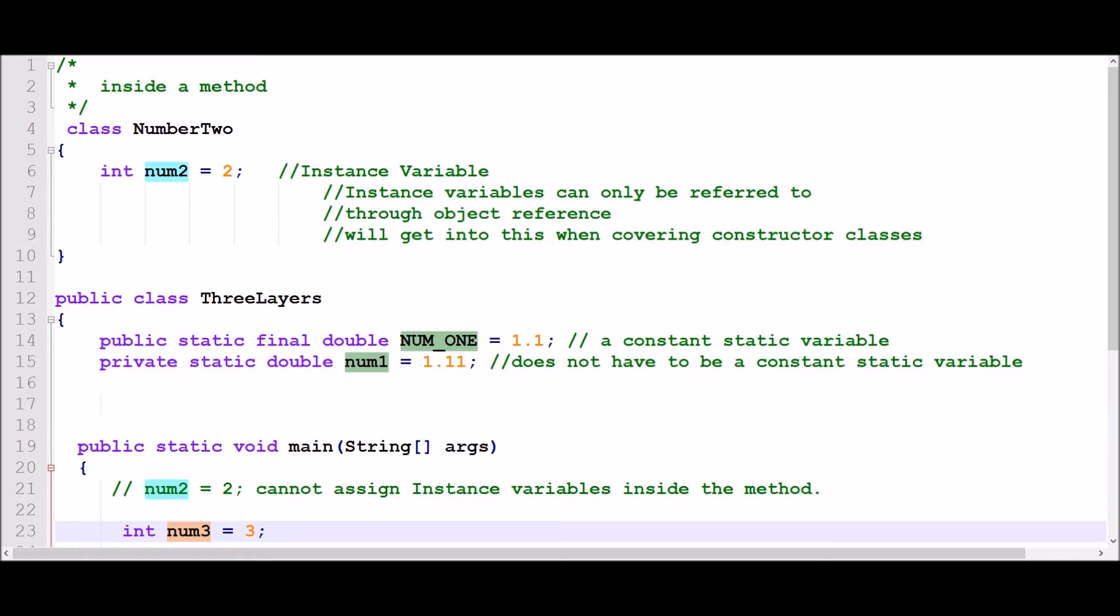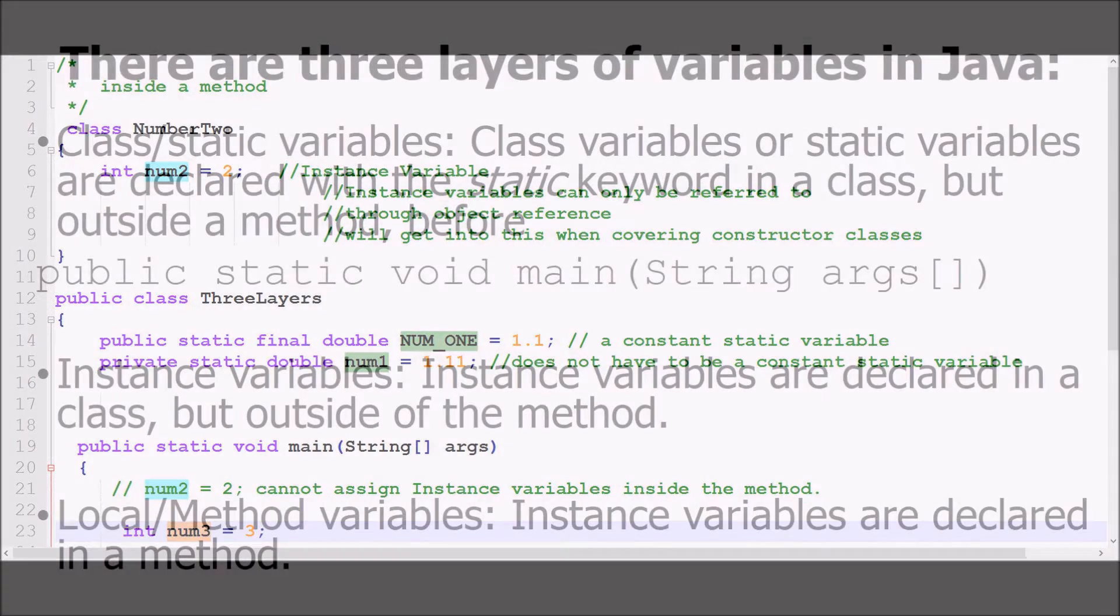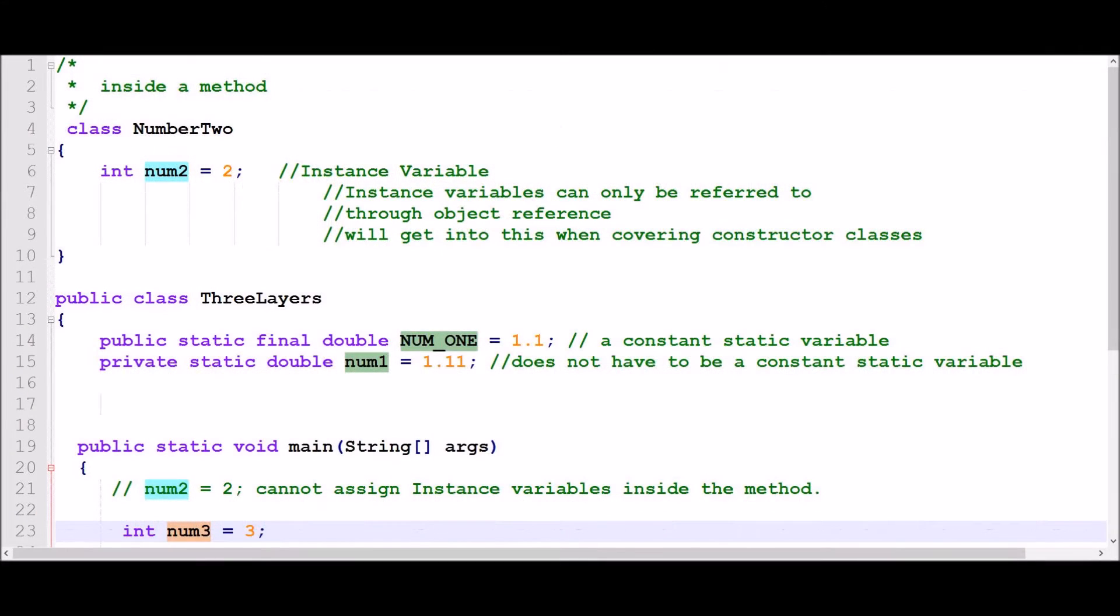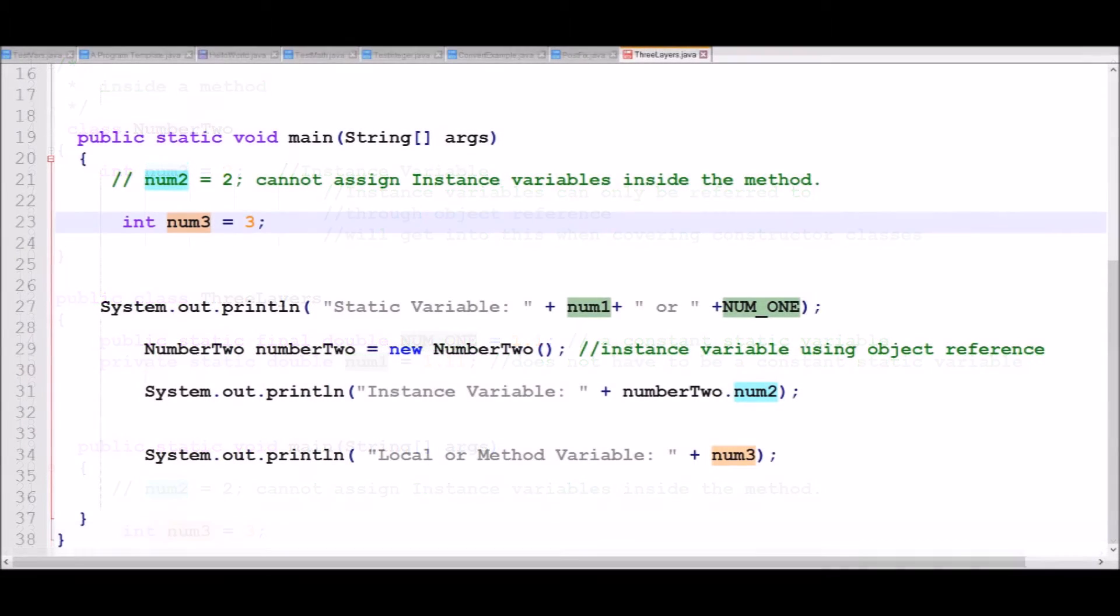Number two is the instance variable. The instance variable is going to be the hardest to understand right now. But when I get into constructor classes, this will be much easier to understand. One of the cool things about an instance variable is that an instance object contains the value of its instance variables without affecting any of the other objects. Number three is the method variable. This local variable is only used within this method.